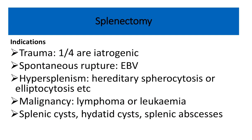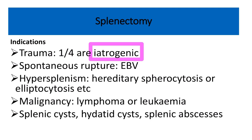Now let's see some important indications for splenectomy. First, trauma — due to iatrogenic or grade 5 splenic injury, a higher grade of splenic injury indicates splenectomy. Other indications include spontaneous rupture by Epstein-Barr virus, hypersplenism, malignancy, splenic cyst, hydatid cyst, and splenic abscess.